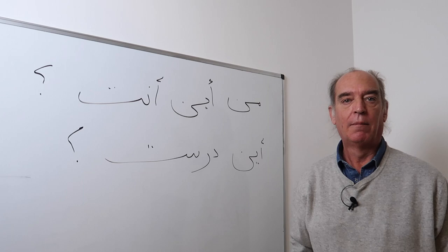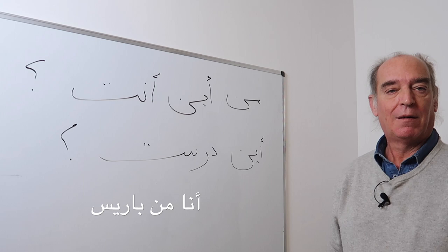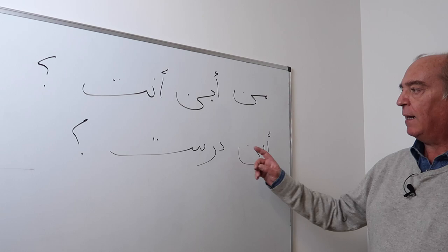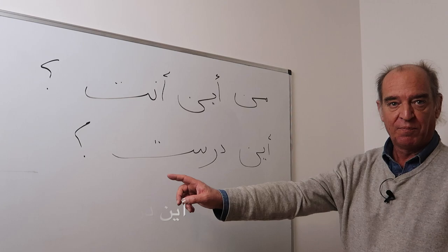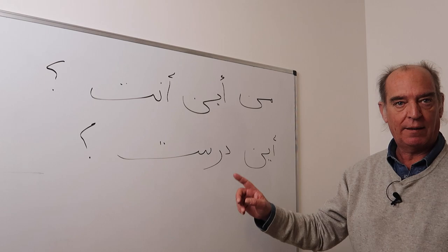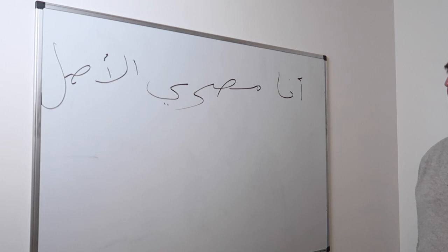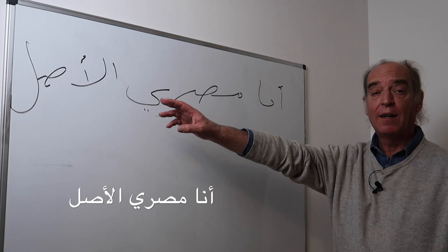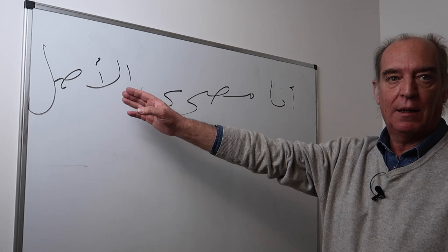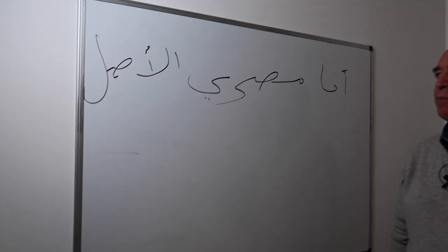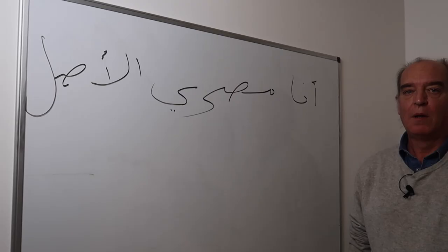You answer: 'Ana min Roma' or 'Ana min Paris,' or wherever you are from. A third question is 'Aina darasta?' — or 'Aina darasti?' — meaning 'Where did you study?' If you have Egyptian origin, you can say 'Ana Misri al-asl' — meaning 'I am Egyptian by origin.' If Italian, 'Ana Itali al-asli'; if American, 'Ana Amriki al-asli.'